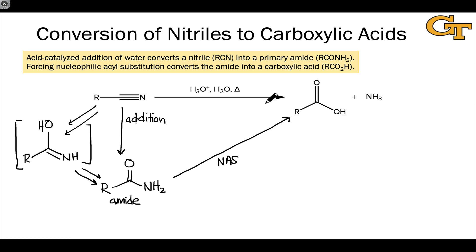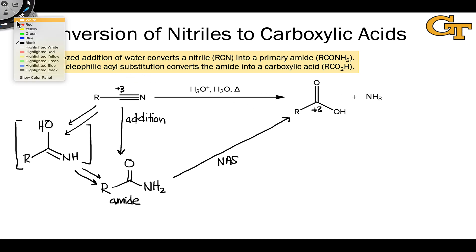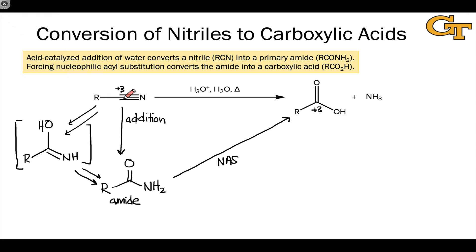On the whole, this conversion of a nitrile to a carboxylic acid is a functional group interchange process. The oxidation state of the carbonyl or nitrile carbon is +3 in the starting material and +3 in the product. However, it's convenient because we've converted a nitrile into a carboxylic acid. The nitrile carbon very likely came from nucleophilic cyanide, which is nucleophilic, but in the carboxylic acid generated at the end, this carbon becomes electrophilic — a way to invert the polarity of that carbon. We can install the carbon using a nucleophilic process and then convert it into an electrophilic carbonyl carbon through hydrolysis.